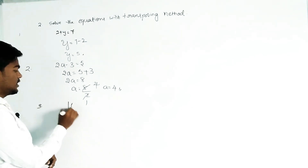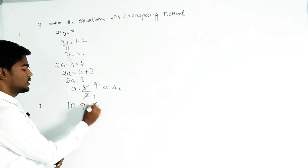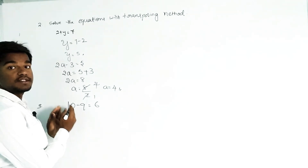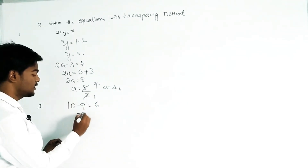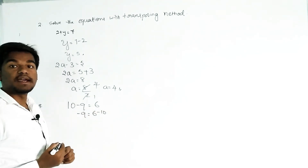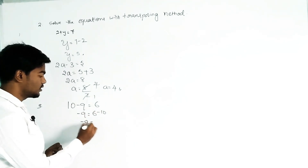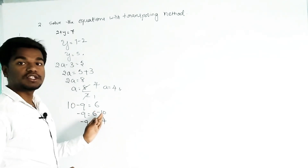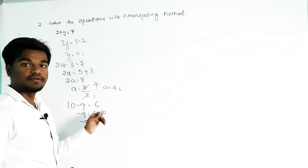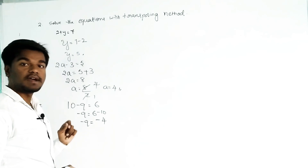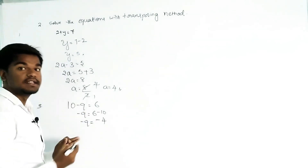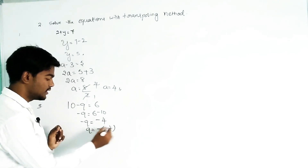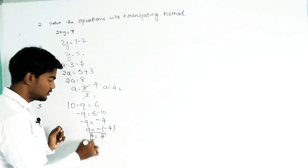Our third question is 10 minus q equals 6. Shift 10 to the right side: minus q equals 6 minus 10, so minus q equals minus 4. Now shift the minus sign to the right side; minus of minus 4 becomes plus 4, so q equals 4.